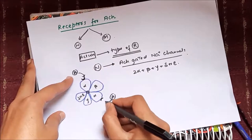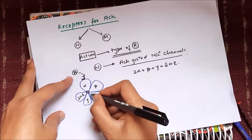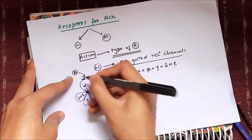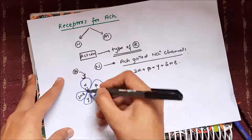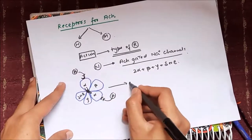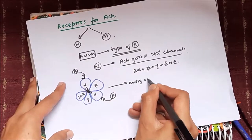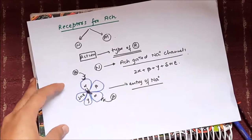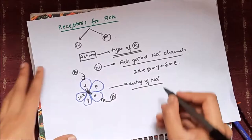The alpha subunit has receptors for acetylcholine, so two molecules of acetylcholine must combine with these receptors. The alpha subunits have projections into the lumen which keep it closed, but once acetylcholine binds, the lumen opens and sodium ions can enter, causing depolarization of the membrane.